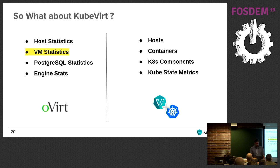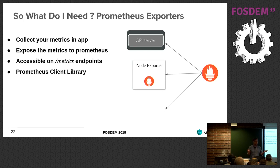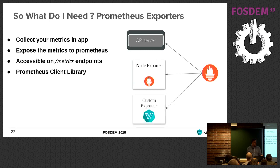Coming back to Prometheus and Kubernetes: we have collection from node exporters, Kubernetes components, and kube-state-metrics, but we're missing collection for virtual machines. Since KubeVirt is new, we need to write a custom exporter, much like the node exporter. Writing a Prometheus exporter can be done using the Prometheus client library — for us it was straightforward since it's mainly in Go. That exporter collects data from the app metrics, exposes it on a /metrics endpoint, and makes it available for the Prometheus server to scrape.